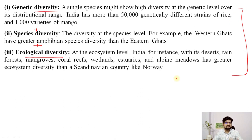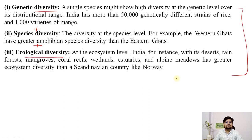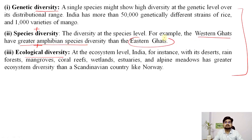To study biodiversity, you have to look at genetic diversity of a species at the gene pool level — we have already learned about centers of origin and gene pools in biogeography. Then we look at species level: for example, the Western Ghats have greater amphibian species diversity than the Eastern Ghats. At ecological diversity, at the ecosystem level, we consider various ecosystems.